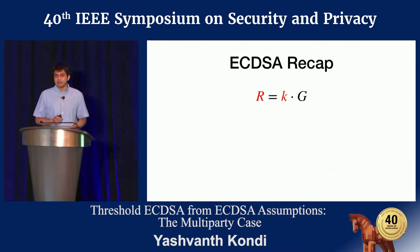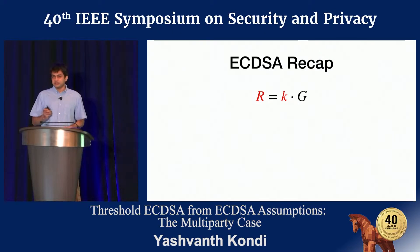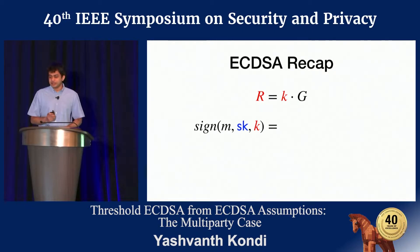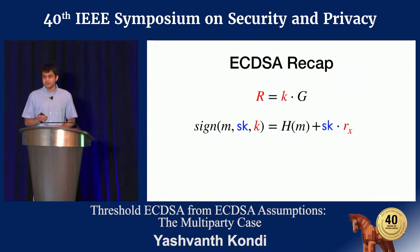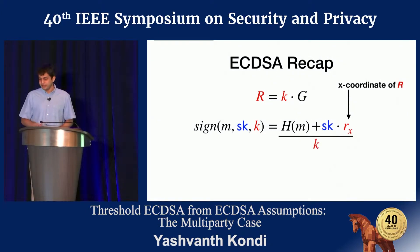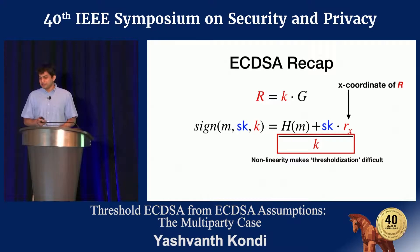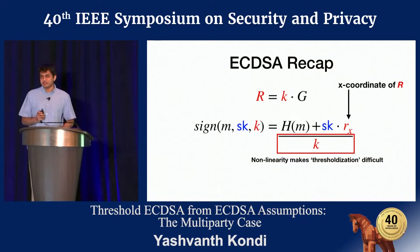A quick recap of how ECDSA signing works: the nonce is the instance key in the exponent. Signing a message involves hashing it first and adding to it the secret key times R_x, which is the x-coordinate of the signing nonce, and then finally division by K, the instance key. Unfortunately, this division step is nonlinear, and this nonlinearity makes adopting ECDSA in the threshold setting somewhat difficult.